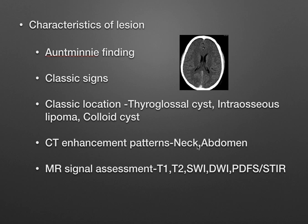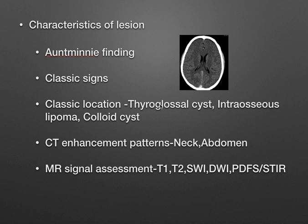Once you have localized the lesion, look at its characteristics. It could be a pathognomonic finding, a classic sign, or a classic location — look for all three. For example, the delta sign: the superior sagittal sinus is hyperdense — a classic sign for venous sinus thrombosis. Classic locations include the thyroglossal cyst, intraosseous lipoma in the calcaneum, and colloid cyst at the anterior aspect of the third ventricle roof. These classic locations give away the diagnosis.